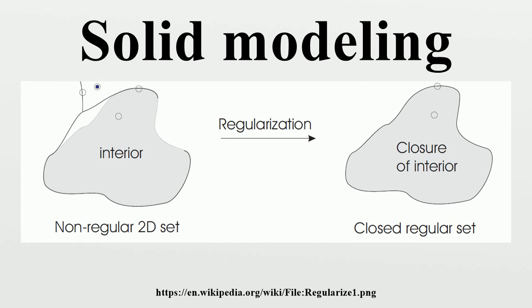For example, conditions can represent a plane and two open linear half-spaces. More complex functional primitives may be defined by Boolean combinations of simpler predicates. Furthermore, the theory of R-functions allows conversions of such representations into a single function inequality for any closed semi-analytic set. Such a representation can be converted to a boundary representation using polygonization algorithms, for example, the marching cubes algorithm.